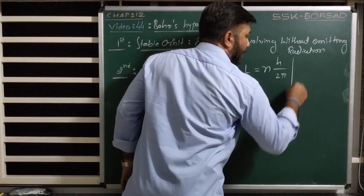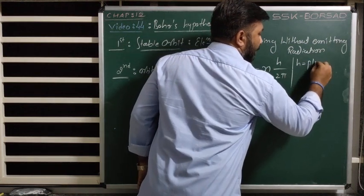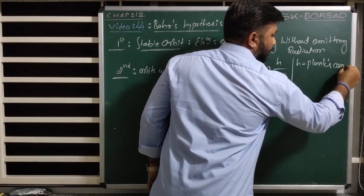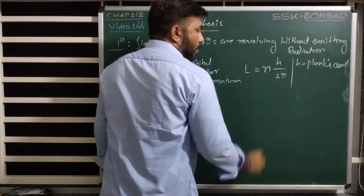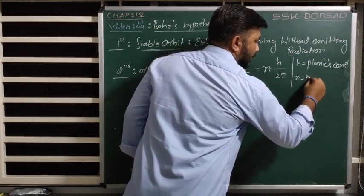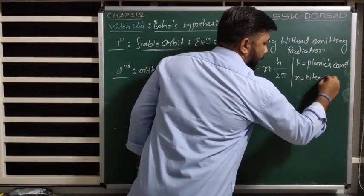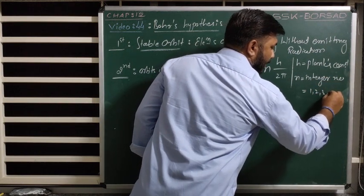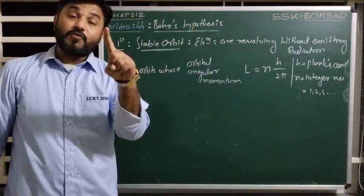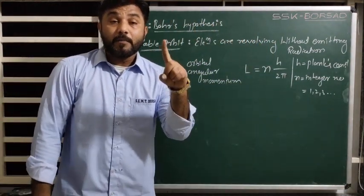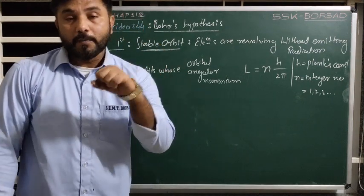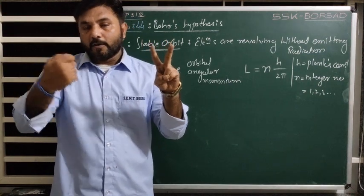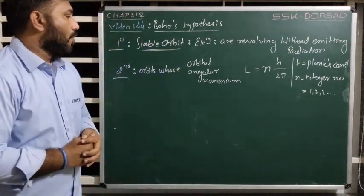What is a stable orbit? The orbit whose orbital angular momentum is an integral multiple of h upon 2π, where h is Planck's constant and n is an integer starting from 1, 2, 3, and so on. If n equals 1, it gives the innermost orbit; n equals 2 means the second orbit, third orbit, and so on.